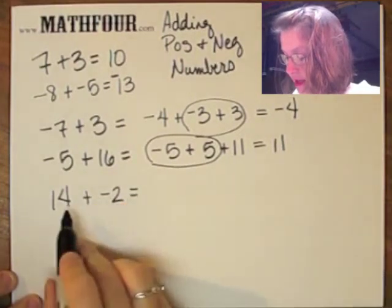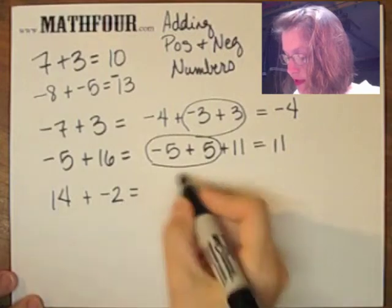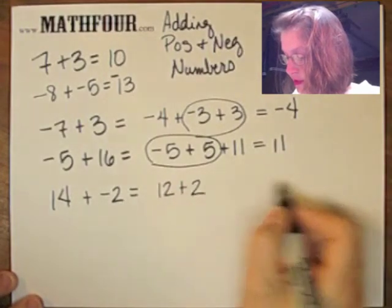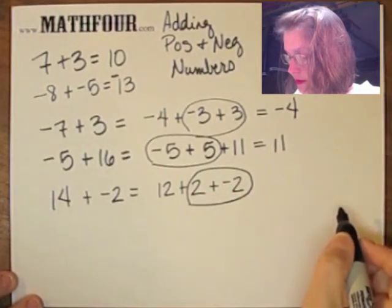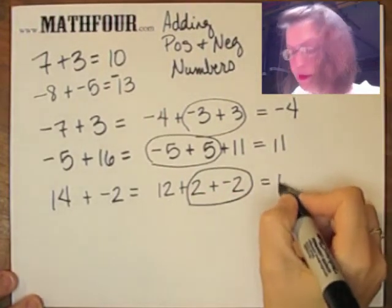14 plus negative 2. You've got negative 2 here. 14 is actually 12 plus 2, plus negative 2. So that gives you 12.